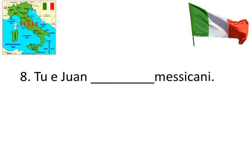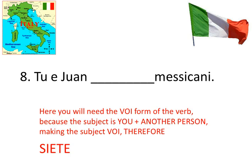Numero 8: Tu e Juan blank mexicani. You and Juan are Mexican. We have the tu form — the tu form singular would be sei, but this is not just the singular. Tu plus somebody else makes it voi. So you need the voi form of essere, which is siete. You plus another person makes it voi, therefore you're picking siete.